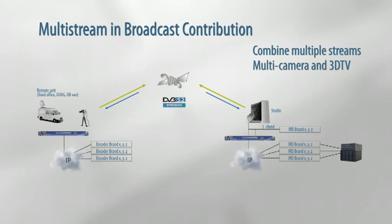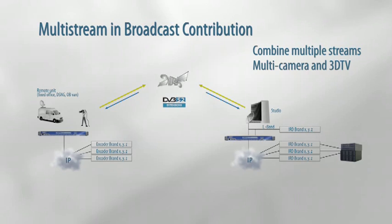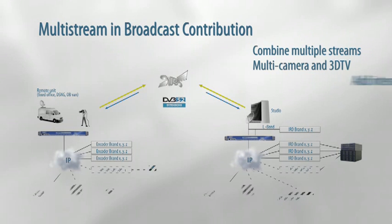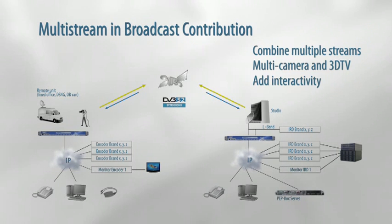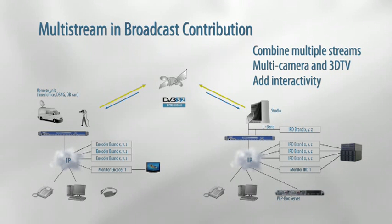On the decoder side, the MDM 6100 can output the streams to your existing IRDs using ASI, IP, L-band, or IF. Because the MDM 6100 is a modem, a bi-directional link can be set up for monitoring or interactivity purposes.